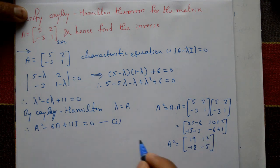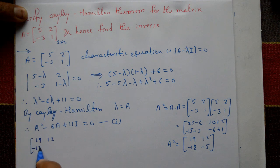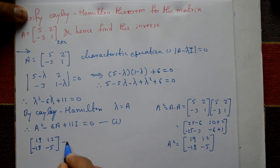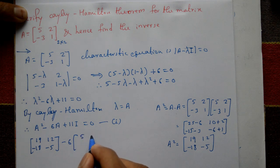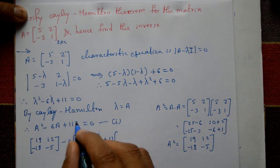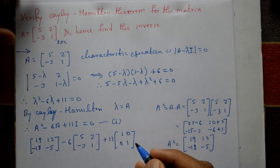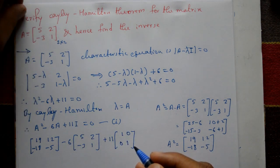So A² = [[19, 12], [-18, -5]]. Now substitute into equation one: A² - 6A + 11I = [[19,12],[-18,-5]] - 6×[[5,2],[-3,1]] + 11×[[1,0],[0,1]].